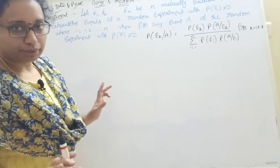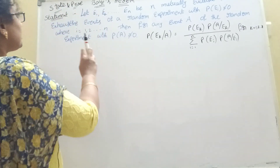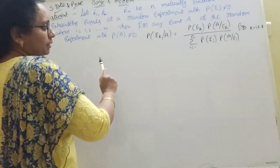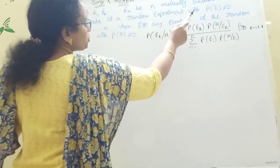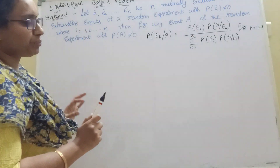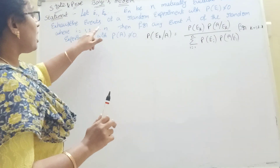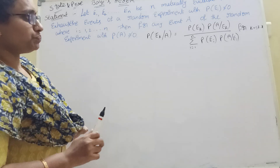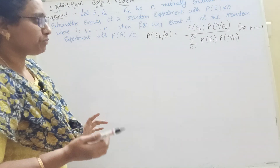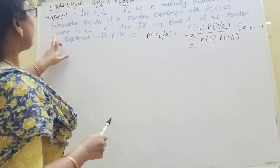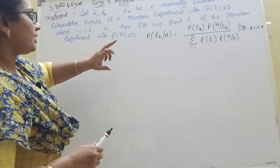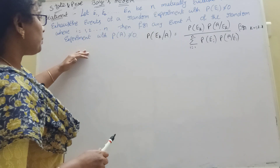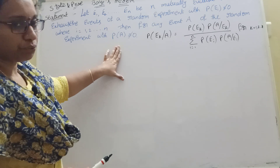Statement and proof of Bayes' theorem. So I will show you that E1, E2, and so on, En be n mutually exclusive and exhaustive events of a random experiment with P of A not equal to 0, where i equal to 1 and so on n. Then for any event A of the random experiment with P of A not equal to 0.